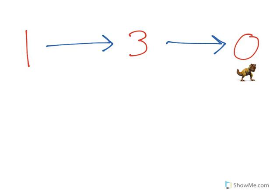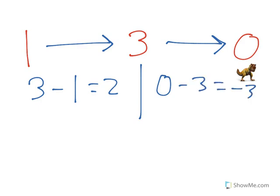Alright, so we start off at position 1 and move to position 3. Final position minus initial position is 2. How about the second leg of our journey? We end up at 0 after having been at 3. 0 minus 3 is negative 3. Since this is distance, let's not worry about the negative sign. We'll add up the two legs of our journey, 2 and 3, and come up with 5.